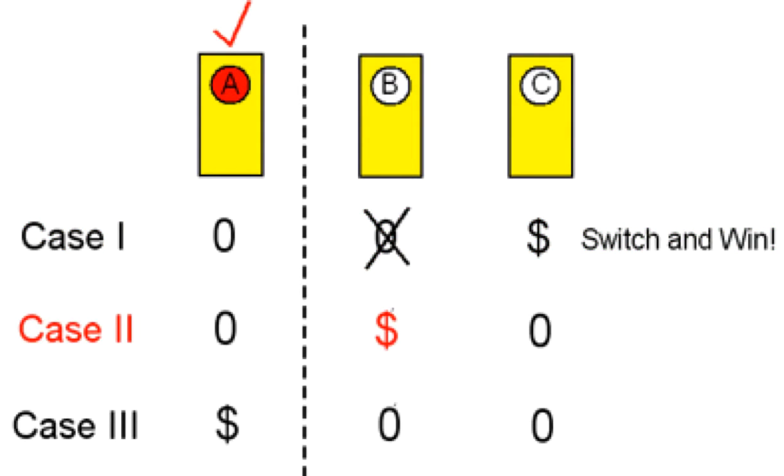If you're in case two, where you chose door A and the prize is behind door B, the host will obviously reveal the empty door C to you. In which case, in order to win, you need to switch from door A to door B.